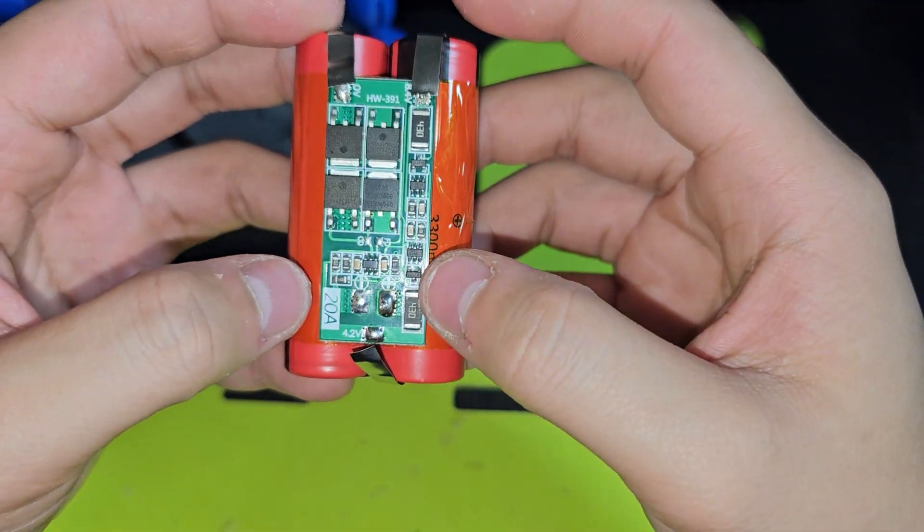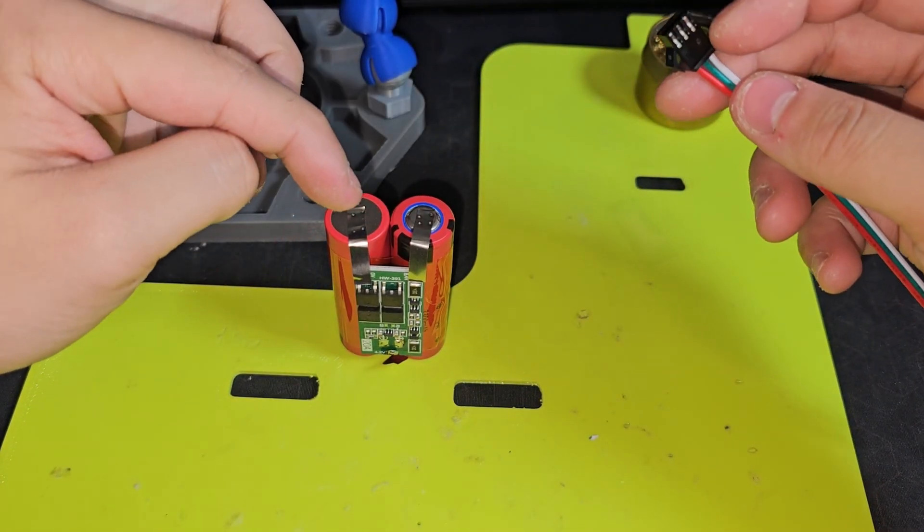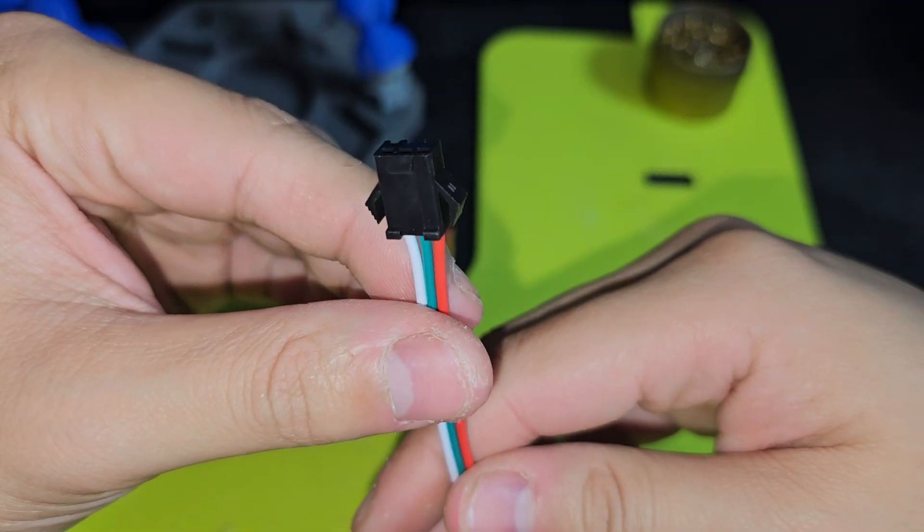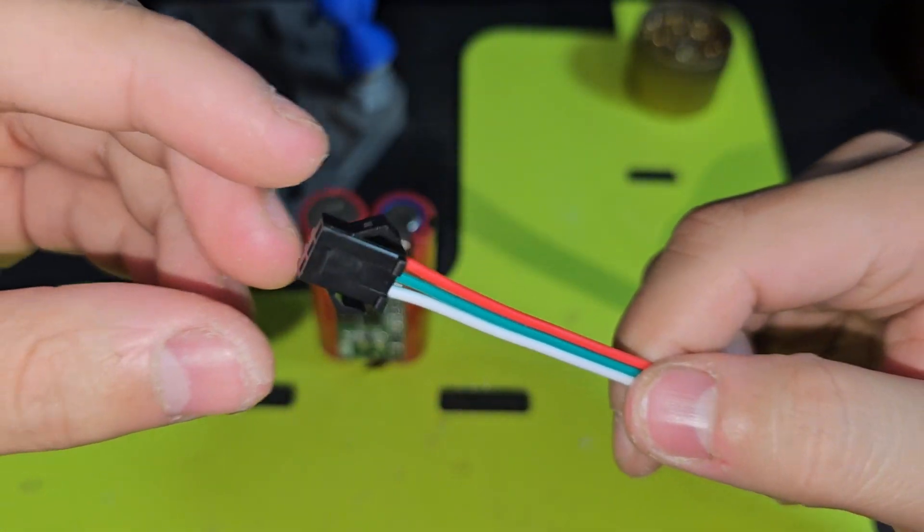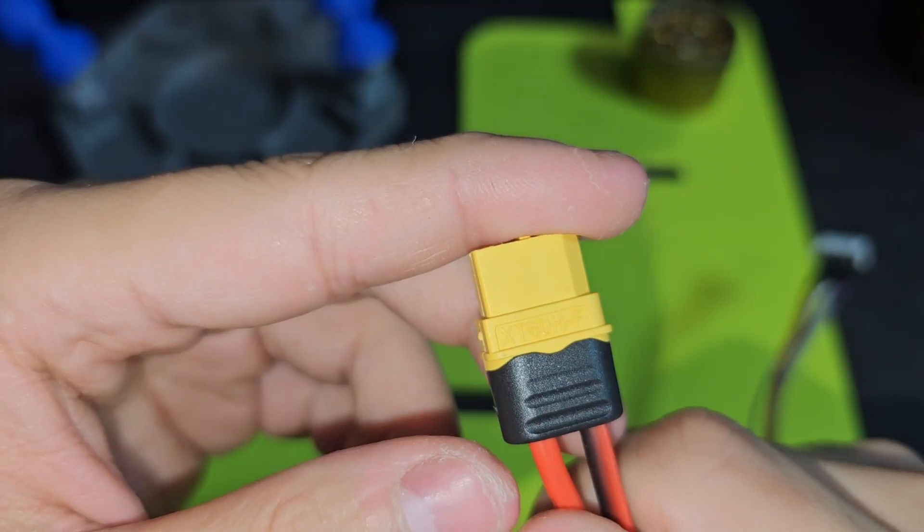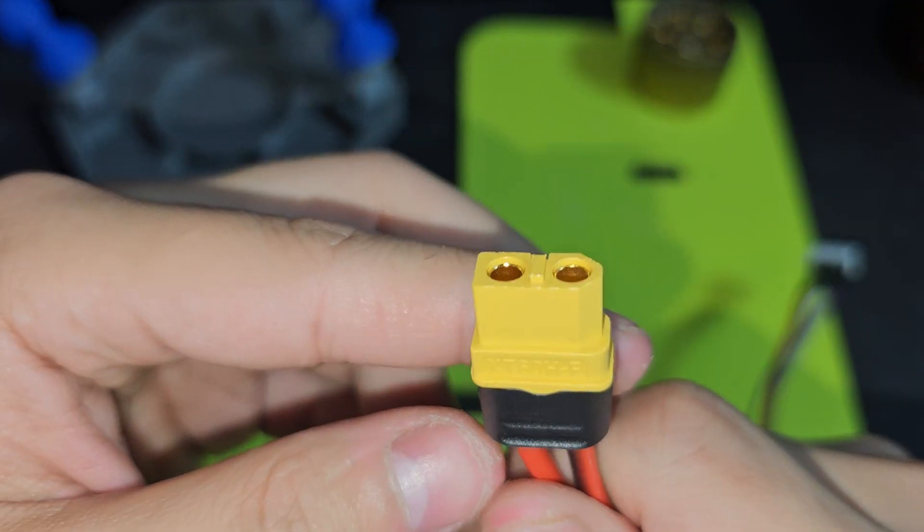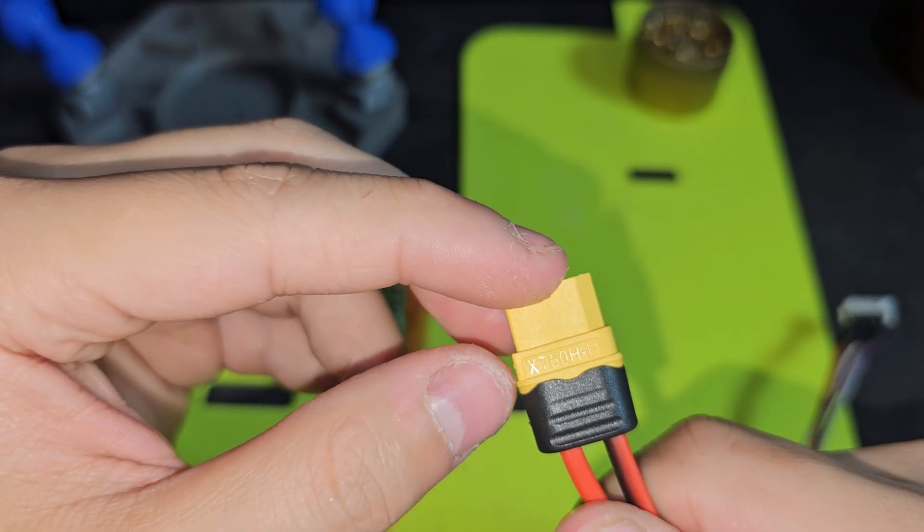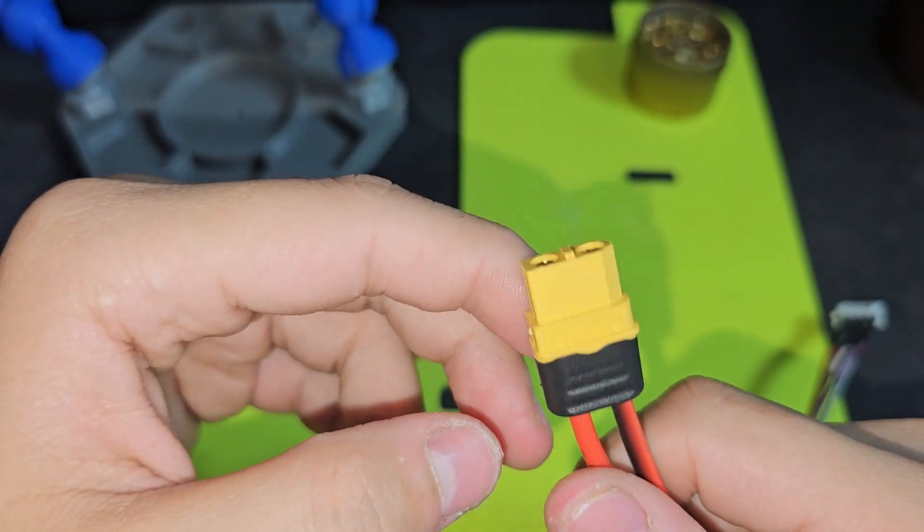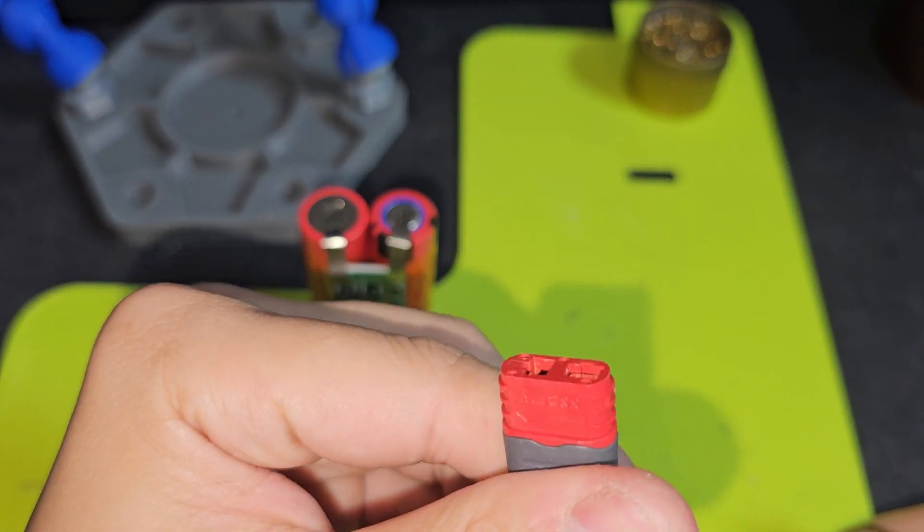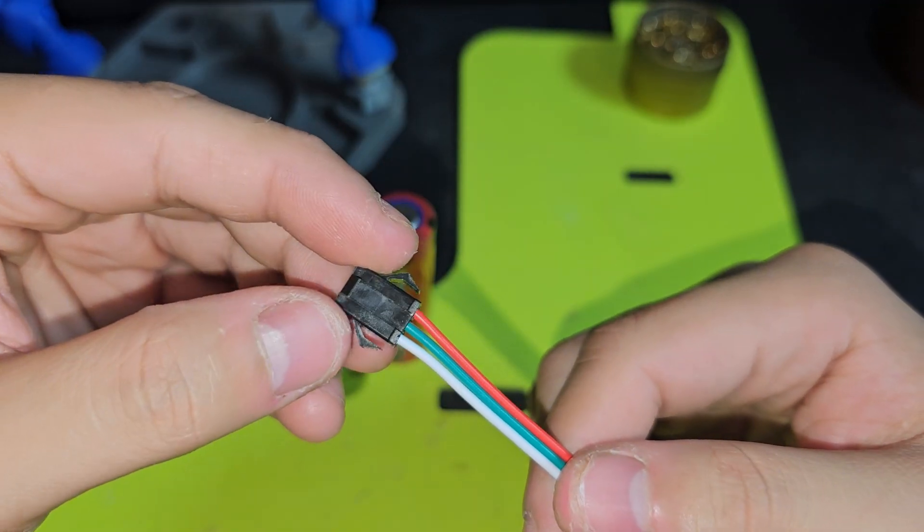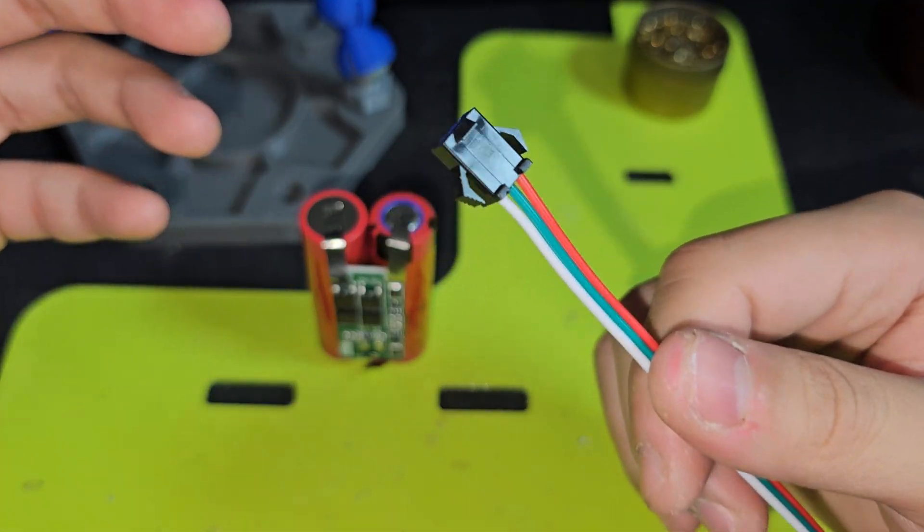For this battery pack specifically, I'm going to be using this type of connector. This type of connector is a JST-SM connector. So if you're on the website, and you need a different connector, I also have this XT60 connector, I have the smaller version, the XT30 connectors too. And one last connector that I have is, these are called T connectors. So there's four different types of connectors that I provide for you to choose from.